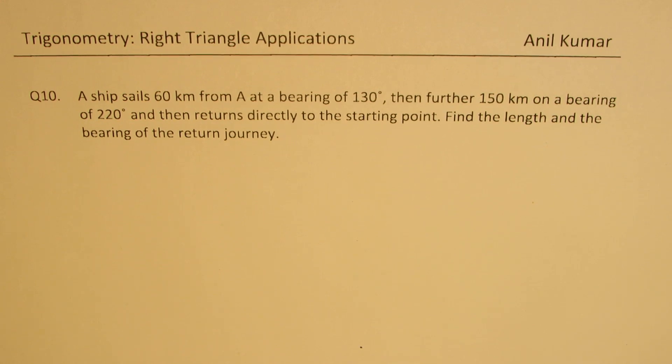A ship sails 60 km from A at a bearing of 130 degrees, then further 150 km on a bearing of 220 degrees, and then returns directly to the starting point. Find the length and the bearing of return journey.